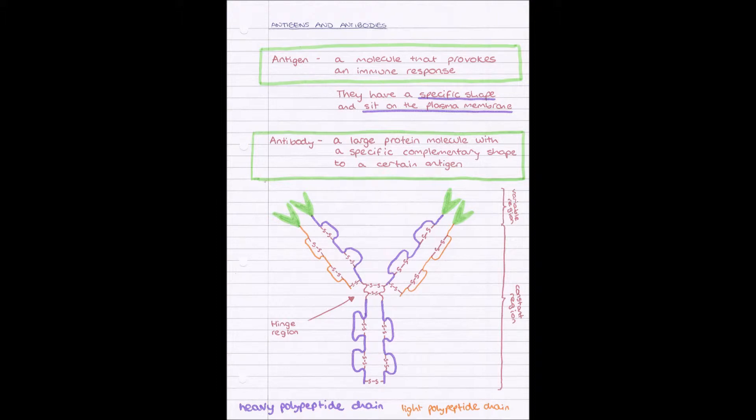And this hinge region in between which links them all together kind of gives it a little bit of flexibility, allows it to move a little bit more. But the variable region is the most important part, and those are those four green hand-looking things. The variable region will have a specific shape which is complementary to an antigen.